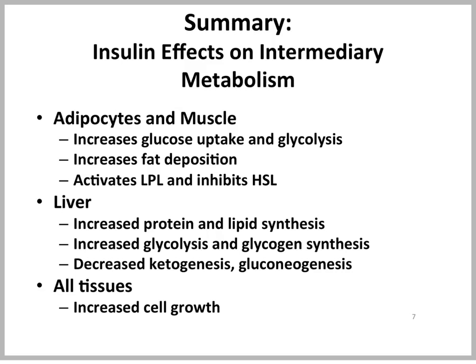In summary, the effects of insulin on intermediary metabolism can be characterized as increased glucose uptake and glycolysis, increased fat deposition, activation of lipoprotein lipase, and inhibition of hormone-sensitive lipase primarily in adipocytes and muscle. In the liver, we see increased protein and lipid synthesis, increased glycolysis and glycogen synthesis, and decreased ketogenesis and gluconeogenesis. And in all tissues, insulin is necessary for cell growth.